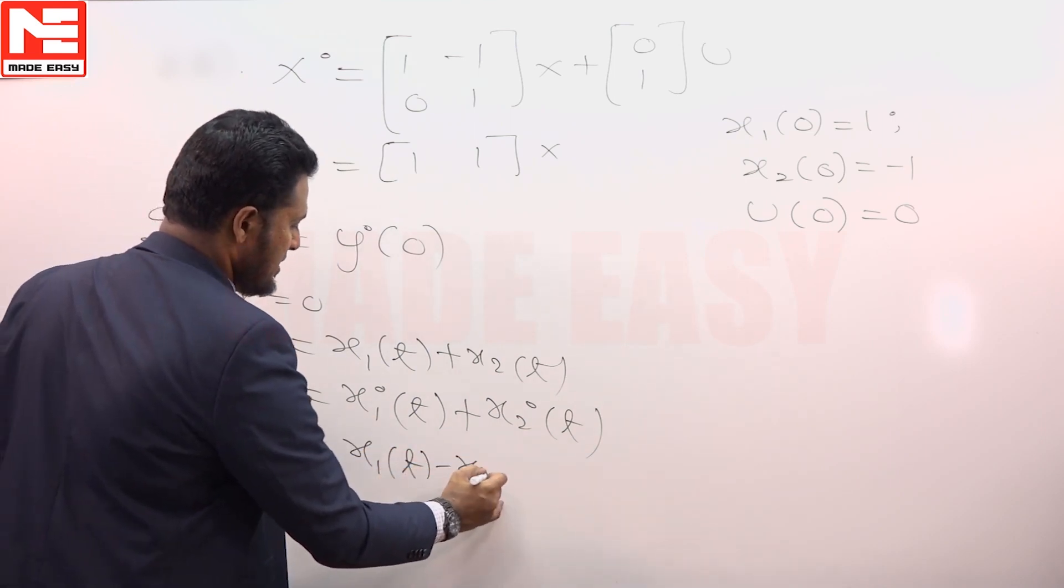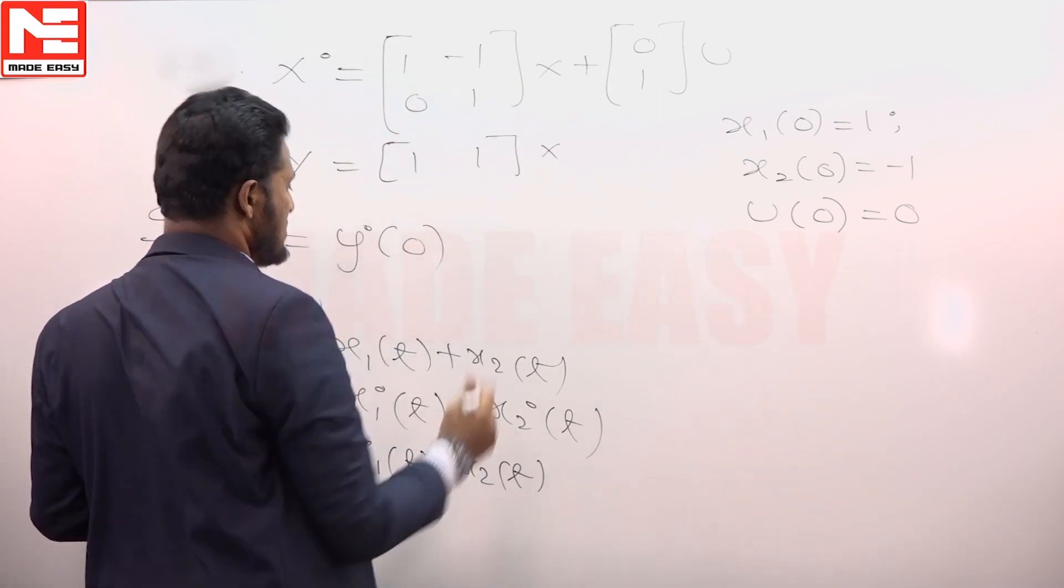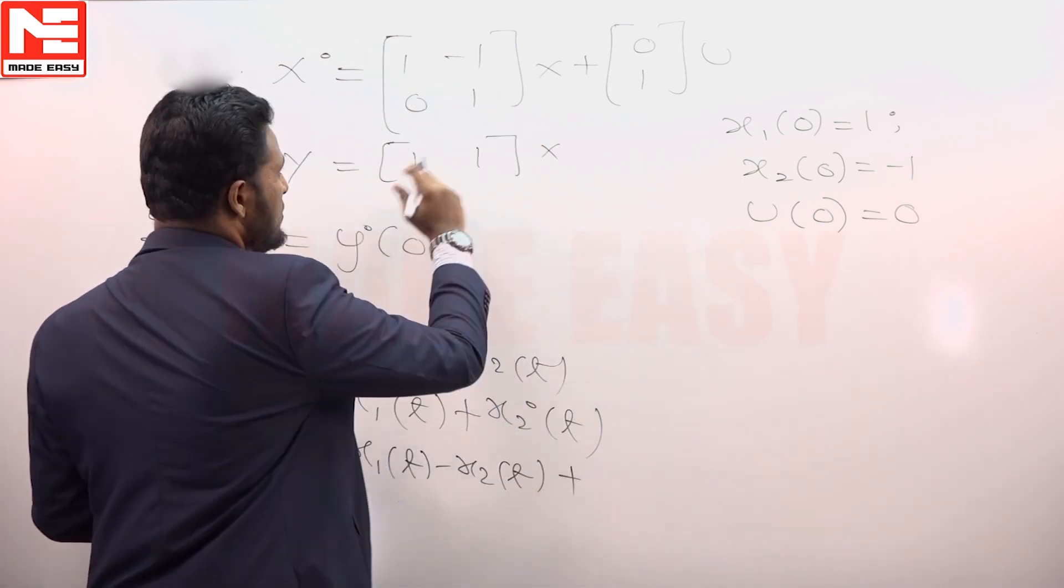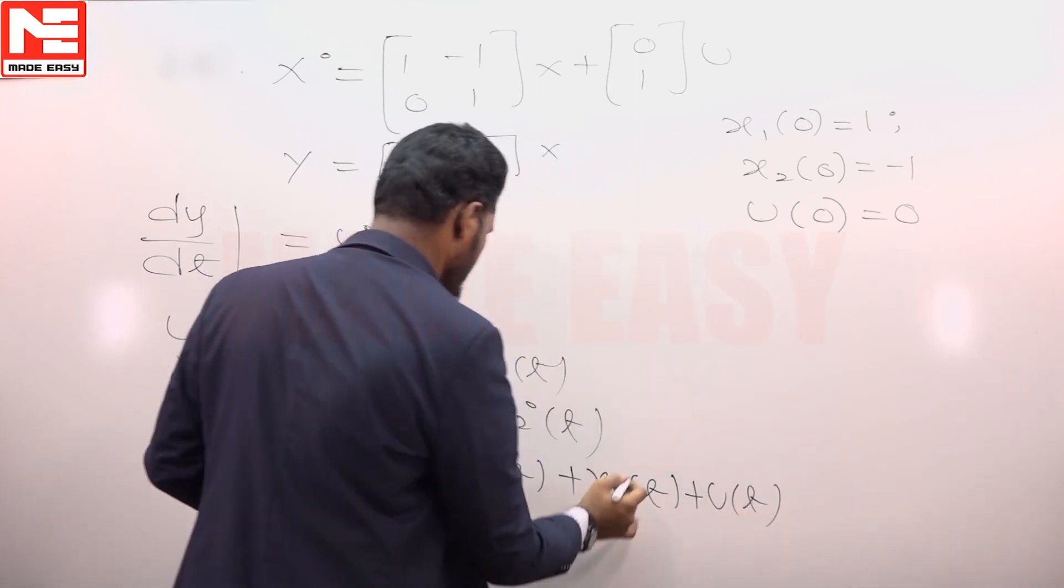x1 dot of t is x1 of t minus x2 of t from the state equation, and x2 dot of t is x2 of t plus u of t.